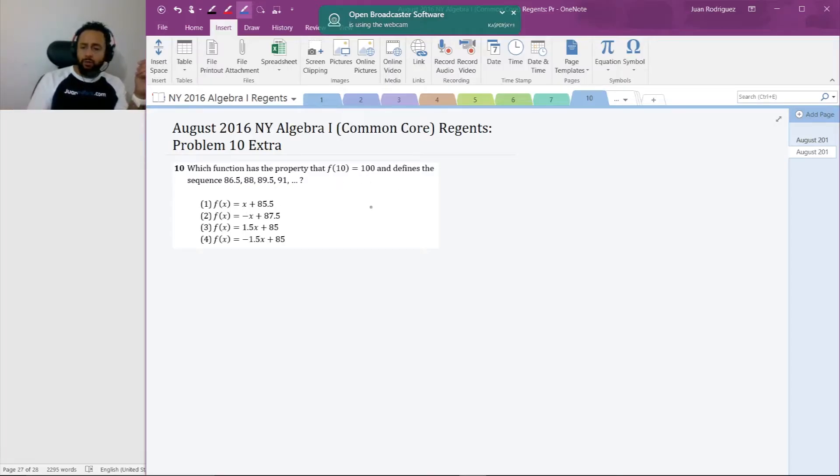Here's how it goes. This sequence, the common difference: 86.5 to 88, that's 1.5. 88 to 89.5, that's also 1.5. And 89.5 to 91, that's also 1.5. So this is an arithmetic sequence, most likely it is, and in Algebra 1 it will be.